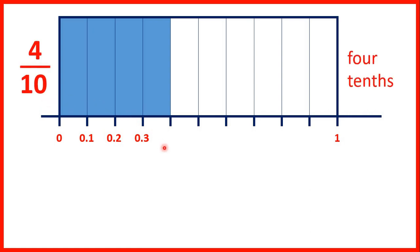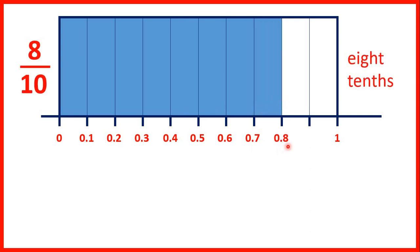If we have four tenths, that's 0.4. Five tenths is 0.5. Six tenths is 0.6. Seven tenths is 0.7. Eight tenths is 0.8.